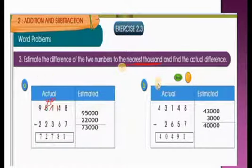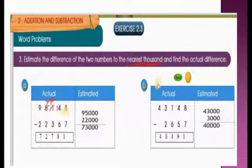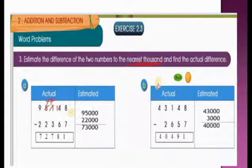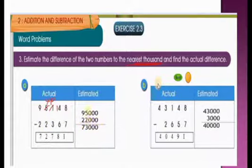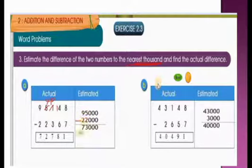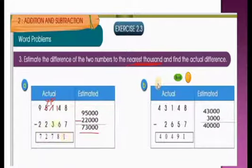Now we have to find the difference of two numbers to the nearest 1,000. Is 5,148 nearest to 5,000 or 6,000 children? Yes, it is nearest to 5,000, so we write 95,000. And 22,367: is 2,367 nearest to 2,000 or 3,000 children? Yes, it is nearest to 2,000, so we write 22,000. Finding the difference: 5 minus 2 is 3; 9 minus 2 is 7. Estimated difference is 73,000.